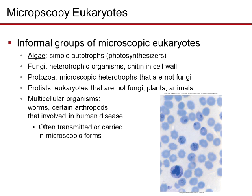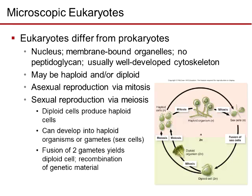When we look at eukaryotes through microscopy, there are informal groups of microscopic eukaryotes. There's algae — simple autotrophs or photosynthesizers. There's fungi, which are heterotrophic organisms that have chitin in their cell wall as opposed to peptidoglycan. There are protozoa, which are microscopic heterotrophs that are not fungi. And there are protists, which are eukaryotes that are not fungi, plants, or animals. Some of these are multicellular organisms like worms and certain arthropods involved in human disease, often transmitted or carried in microscopic form.